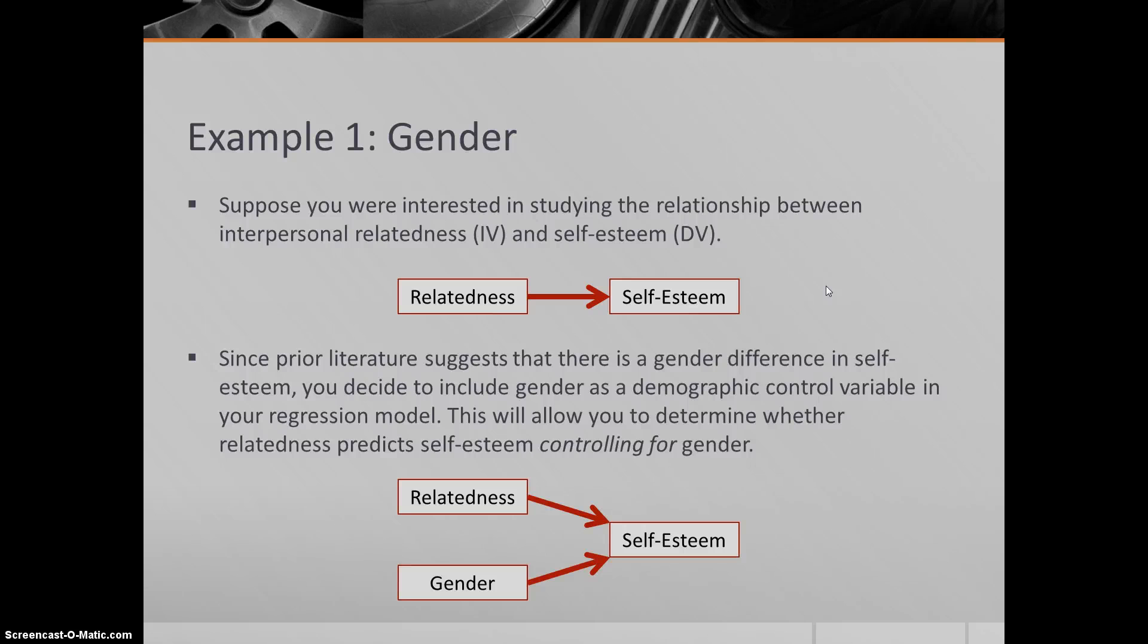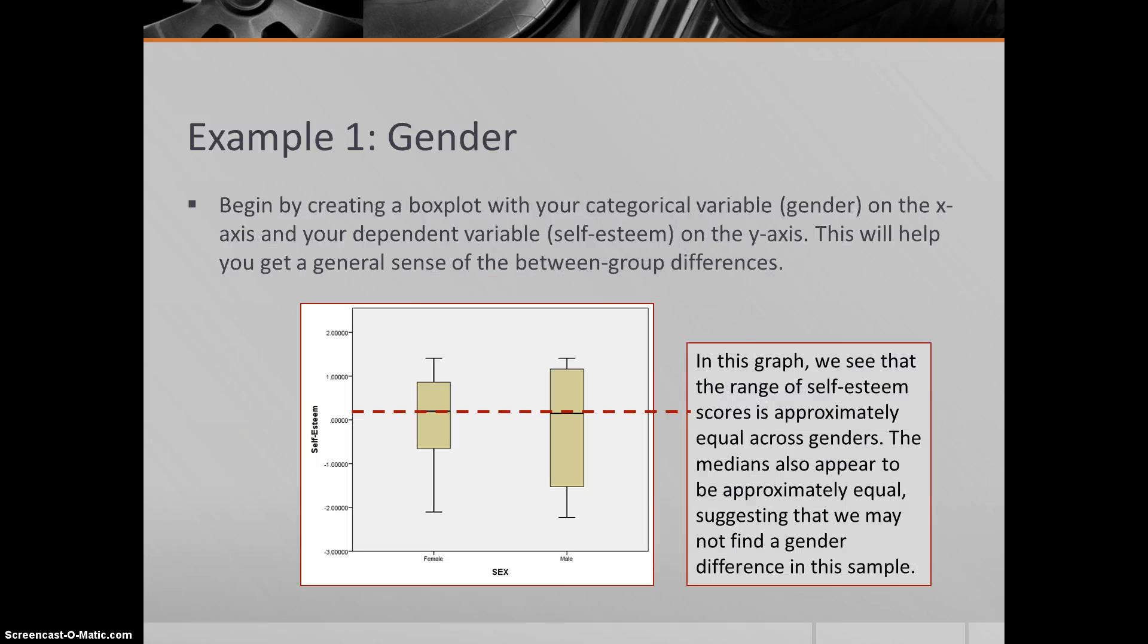This allows you to determine whether relatedness predicts self-esteem controlling for gender. Gender can clean up some of the variation associated with demographics, and now it would be easier to detect a relationship between relatedness and self-esteem because we've controlled for some of that variation. Suppose that's what we're up to.